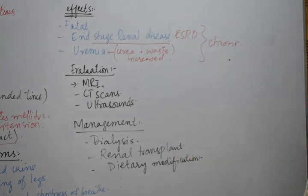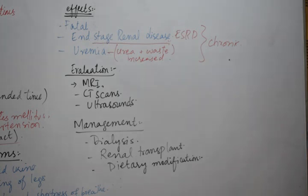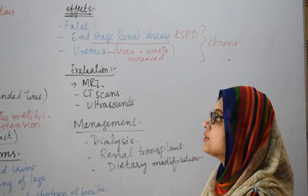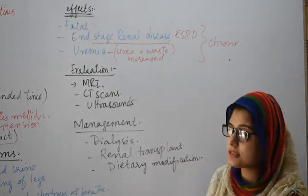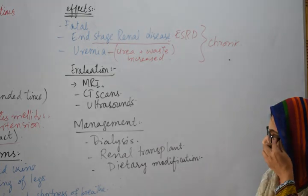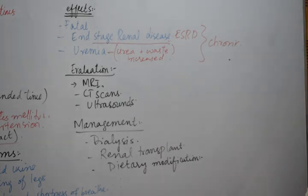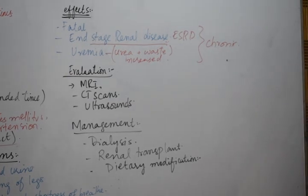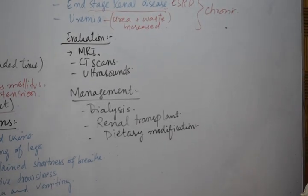These are the two main effects of chronic kidney failure or renal failure, which can lead to the need for dialysis or transplant. Moving to evaluation and diagnosis — blood tests and urine tests can be done, but the most precise method is MRI or CT scan.